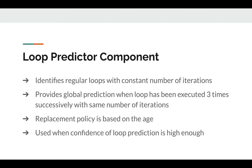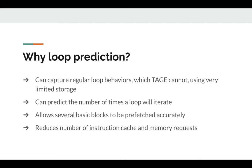The replacement policy of a prediction is based on the age of the prediction. Loop prediction is used because it can capture regular loop behaviors which TAGE cannot, using very limited storage, and it can predict the number of times a loop will iterate. This allows several basic blocks to be prefetched from memory accurately, reducing the number of instruction cache and memory requests, thereby increasing performance and reducing latency quite significantly.